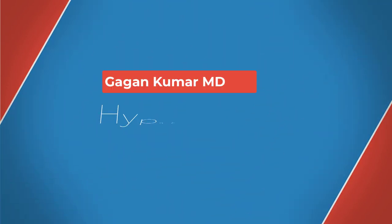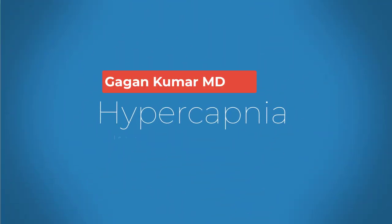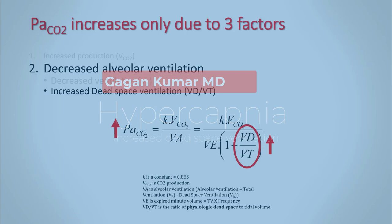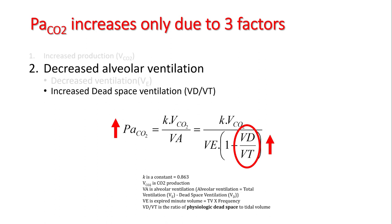Hello everyone, today we'll be talking about hypercapnia. Dead space ventilation can be a complicated topic, so we'll dedicate a few lectures to this. We learned from the previous lecture that the pCO2 increases because of increased production, decreased minute ventilation, and increased dead space ventilation. Today we'll be talking about the VD/VT ratio, which is called dead space fraction.